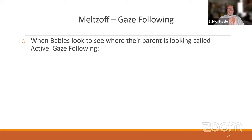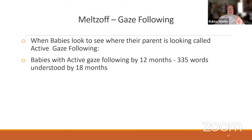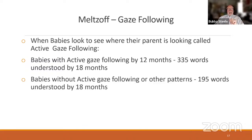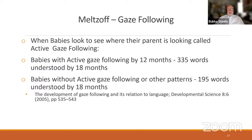Meltzoff also found that when babies had active gaze following by 12 months of age, at 18 months they understood 335 words. Babies will only say a few words at 18 months, but they understood and responded to 335 words if they had active gaze following. If they did not have active gaze following, they only understood 195 words. Vision is so critical and foundational in all of development — this was from 2005, 'The Development of Gaze Following.'